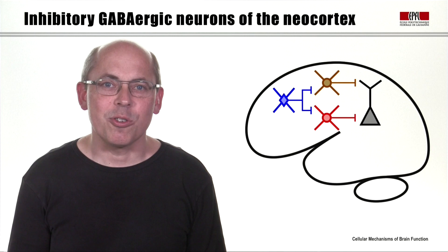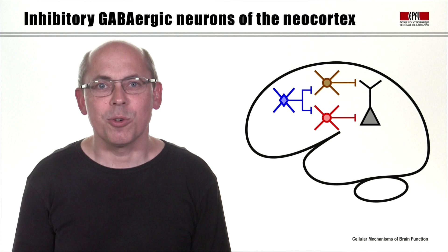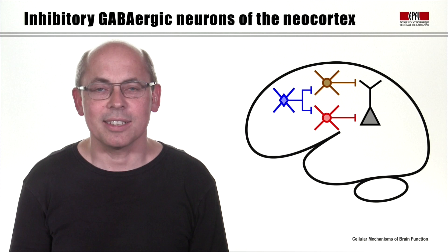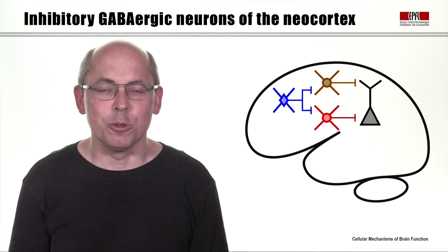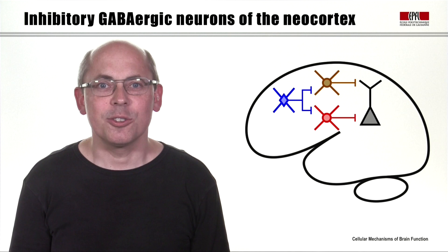The inhibitory neurons of the neocortex are such local interneurons, and in general they don't have long-range axonal projections. The GABAergic neurons of the neocortex are a small fraction of the total number of neurons — 85% of the neurons in the neocortex are excitatory glutamatergic neurons, and that leaves about 15% of the cells as the GABAergic local inhibitory neurons.